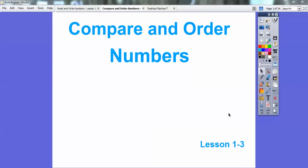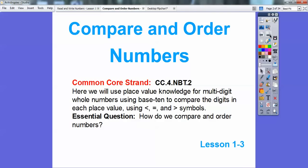This lesson is on compare and order numbers. Our Common Core strand is CC.4.NBT.2. You're going to use place value knowledge for multi-digit whole numbers, particularly using base-ten to compare the digits in each place, and we're going to use the less than, equal sign, or the greater than symbols and number lines. So how can we compare and order numbers is our essential question.